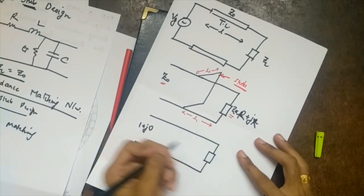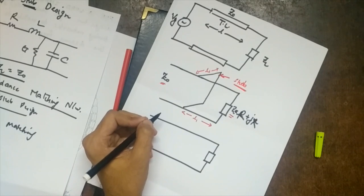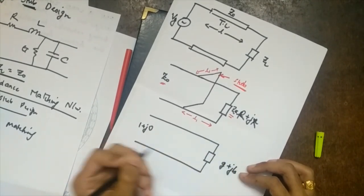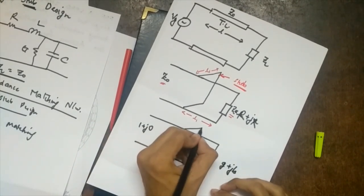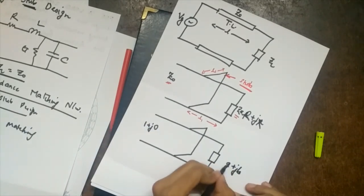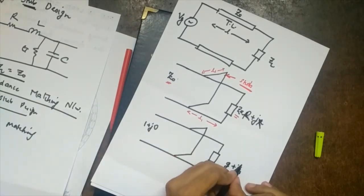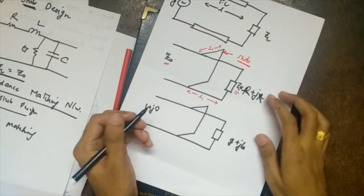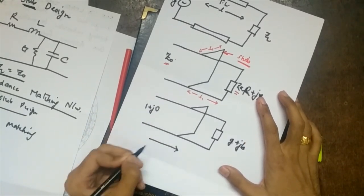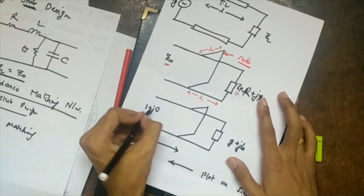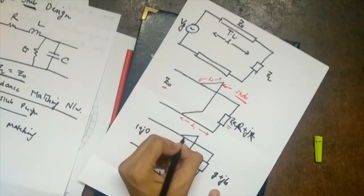The problem reduces to making g plus jb equal to 1 plus j0. While understanding the concept we move left to right, but while plotting on the Smith chart we go right to left. The key thing to remember: the stub always changes the reactive part only — it is usually an inductor or a capacitor. So the stub changes jb but not the conductance g.